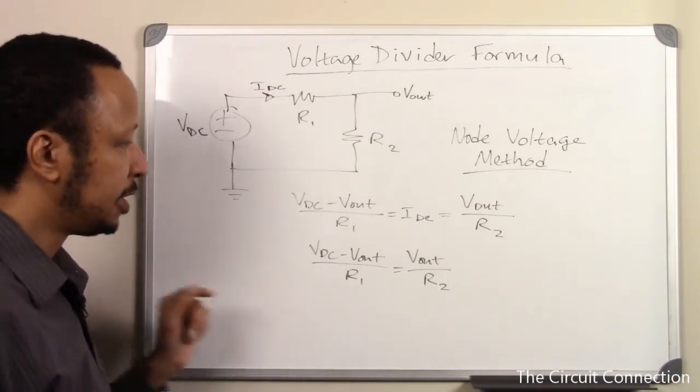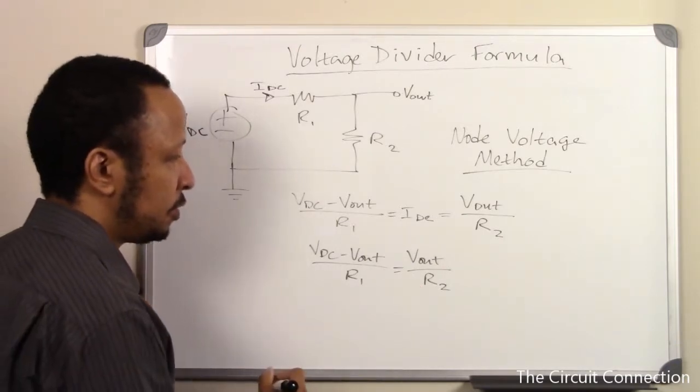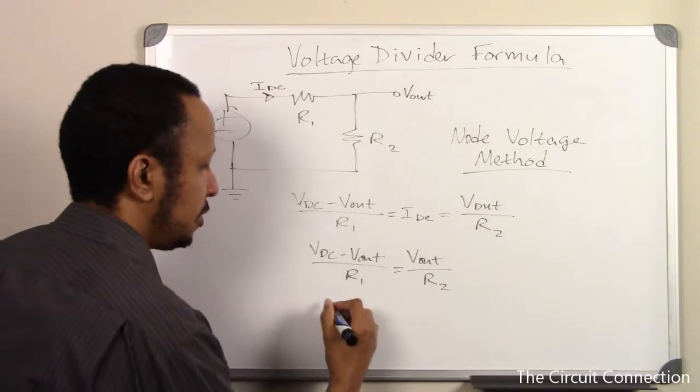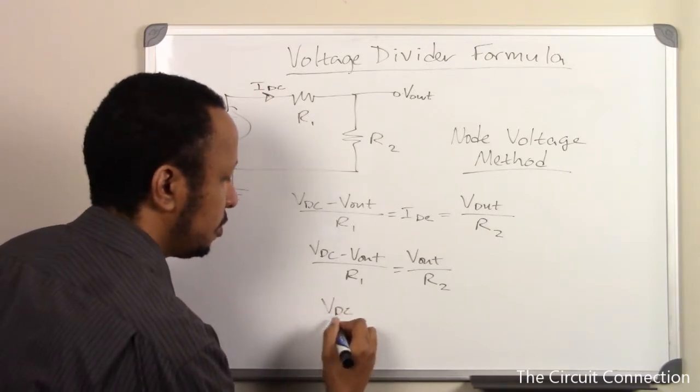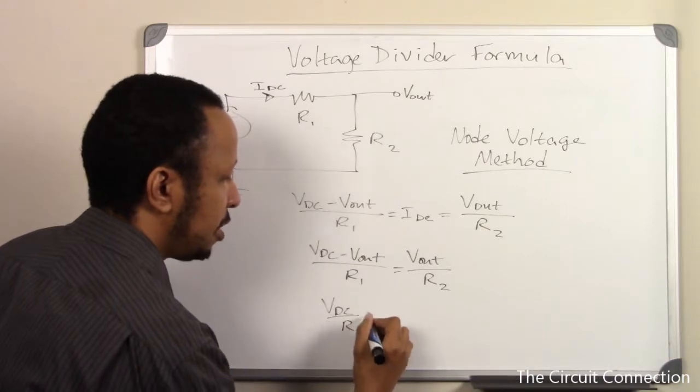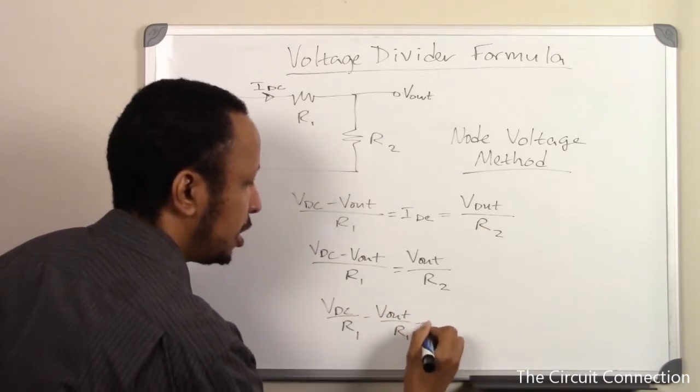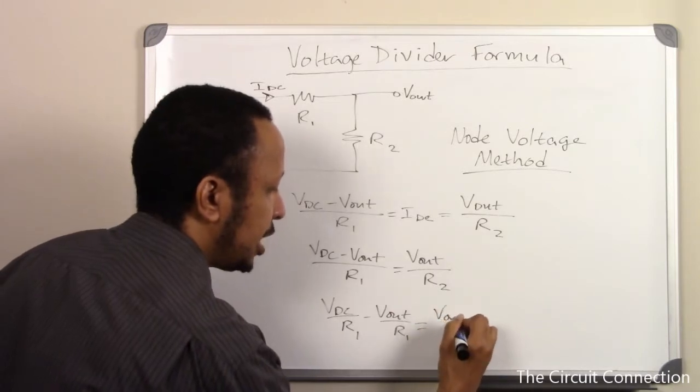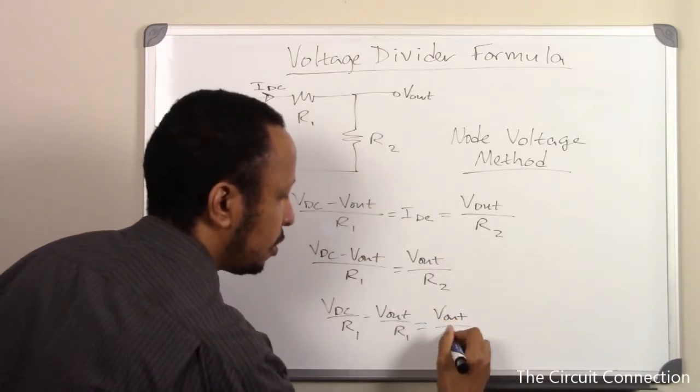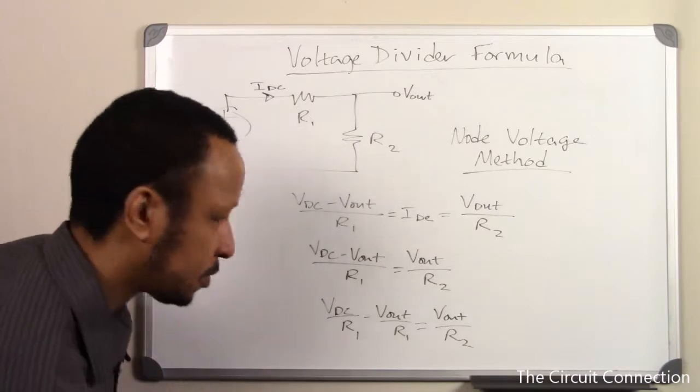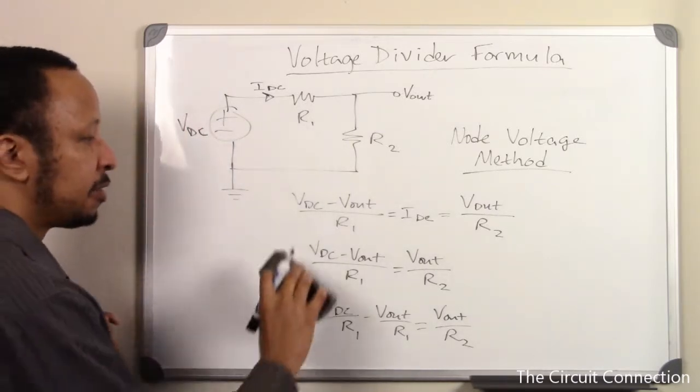So we'll continue on from there. Next thing we'll do is start splitting things up. VDC over R1 minus Vout over R1 equals Vout over R2. Next I'll go ahead and make some more room here.